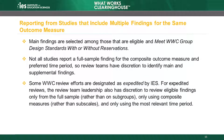Some WWC review efforts are designated as expedited by IES. For expedited reviews, the review team leadership also has discretion to focus each study review on eligible findings only from the full sample rather than on subgroups, only using composite measures rather than subscales, only using the most relevant time period as specified in the applicable review protocol, and only using the most relevant comparison group. Other eligible findings within a study may not be reviewed when the WWC conducts an expedited review.